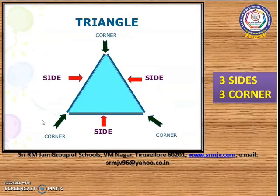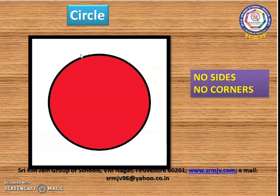This is a triangle. Triangle has three sides and three corners. This is a circle. Circle has a curved line. There are no sides and corners in a circle.